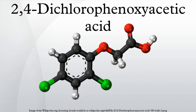2,4-D (chlorophenoxyacetic acid) is a common systemic herbicide used in the control of broadleaf weeds. It is one of the most widely used herbicides in the world and is the third most commonly used herbicide in North America. 2,4-D is a synthetic auxin, and as such it is often used in laboratories for plant research and as a supplement in plant cell culture media.